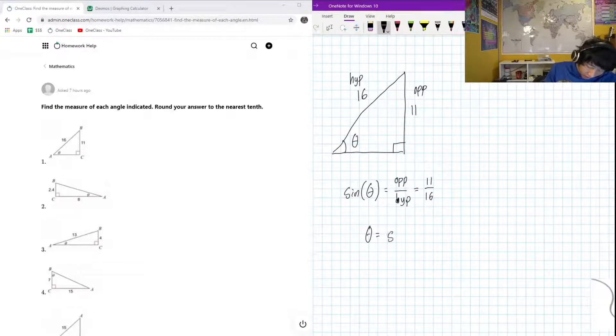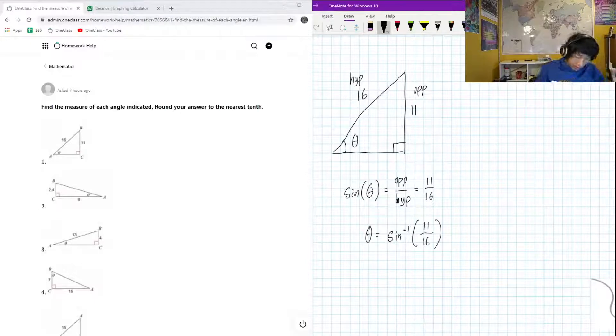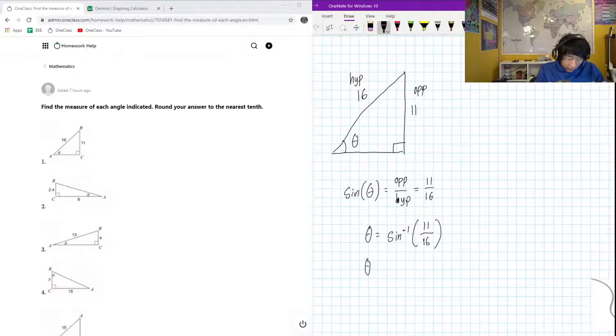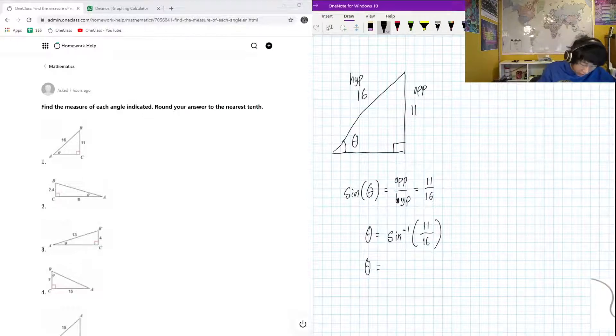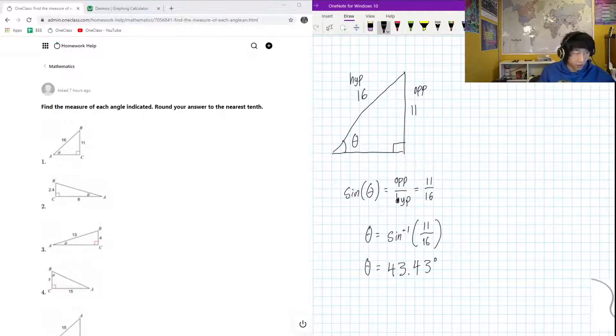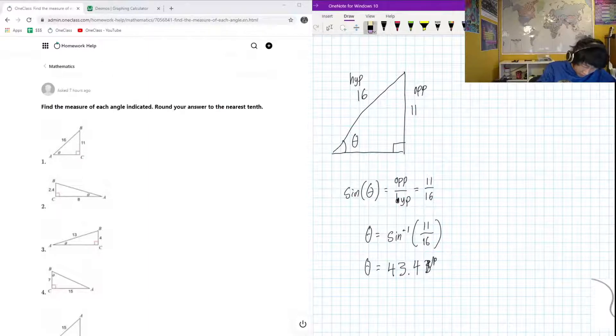If we wanted to find theta, well we just do the inverse sine, arc sine as it's also sometimes called. Let's ask our calculator that: inverse sine 11 divided by 16. The result of that calculation is 43.43 degrees. It said round to the nearest tenth, so it's just gonna be 43.4 degrees.